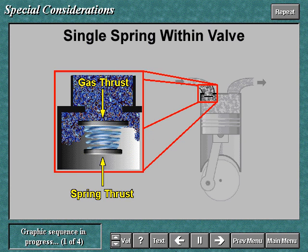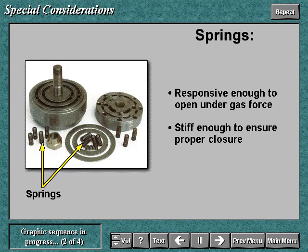If spring stiffness and ring lift or gas velocity are not correctly related to each other, the rings are not stable and will flutter. Springs must be selected so that they are responsive enough to allow the rings to open under the gas force and to avoid vibration. They must also be selected so that they are stiff enough to avoid closure after the dead end of the stroke.